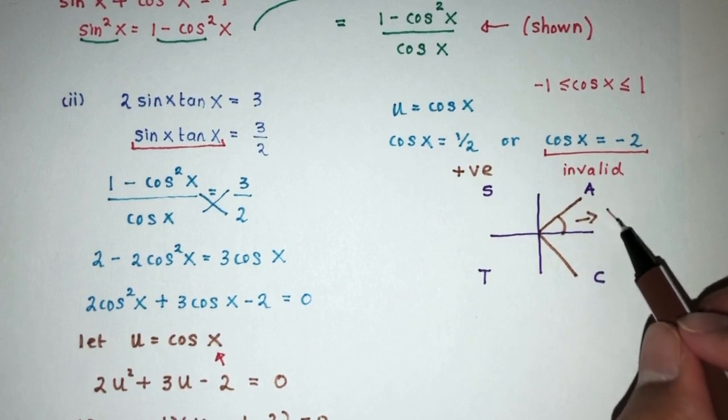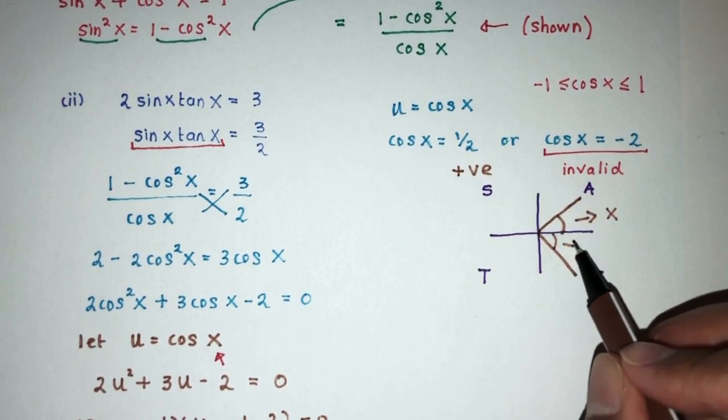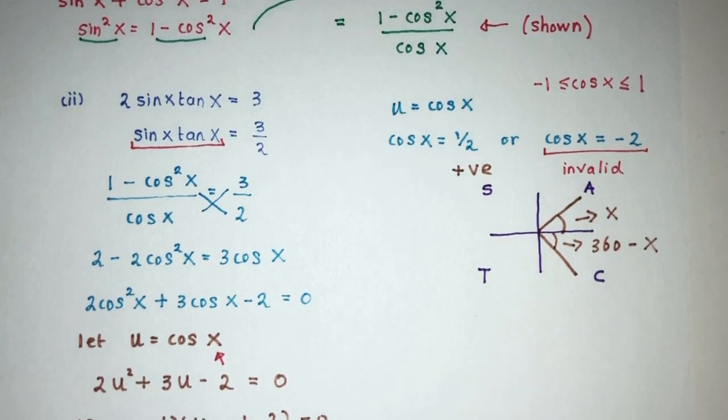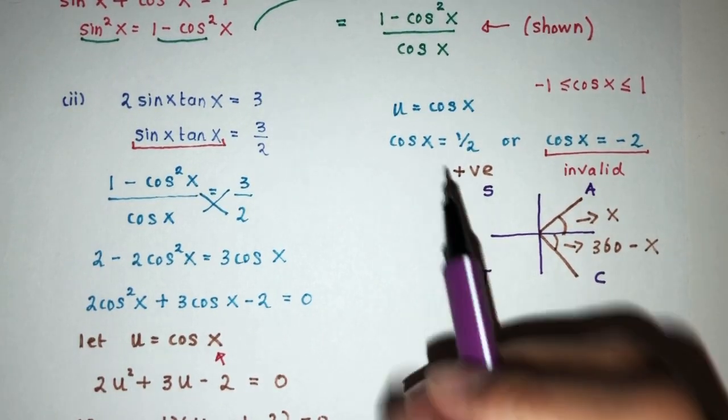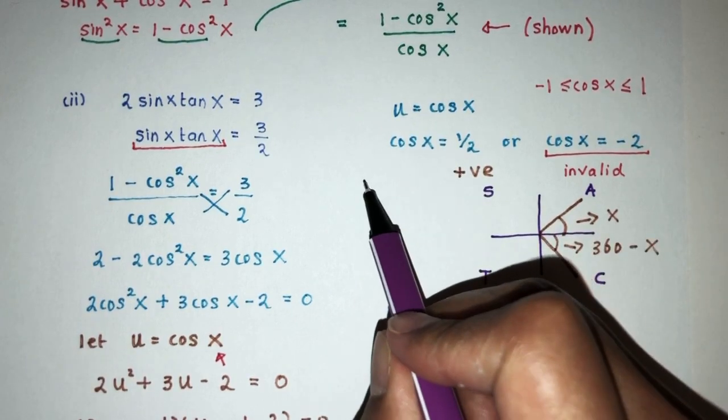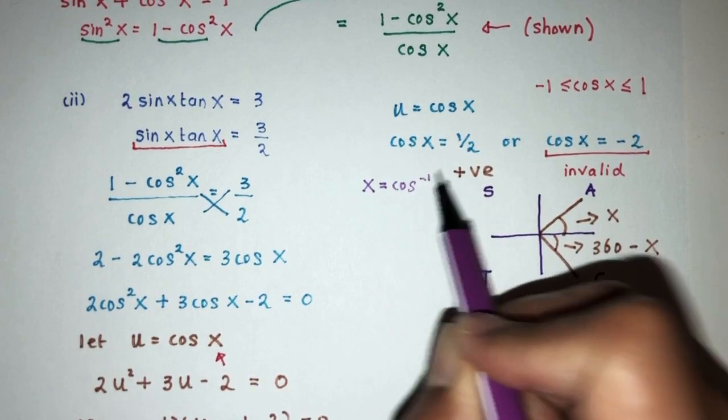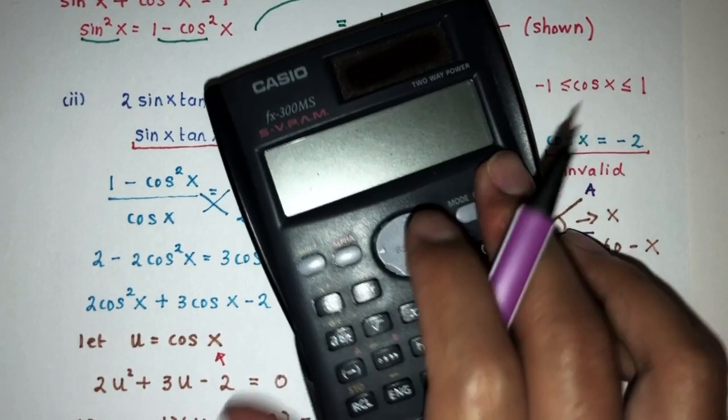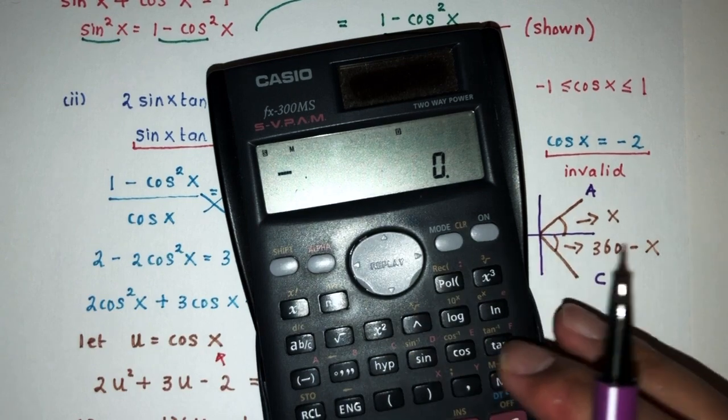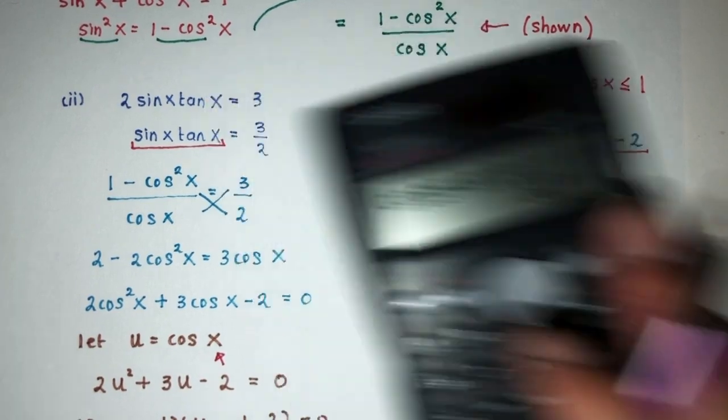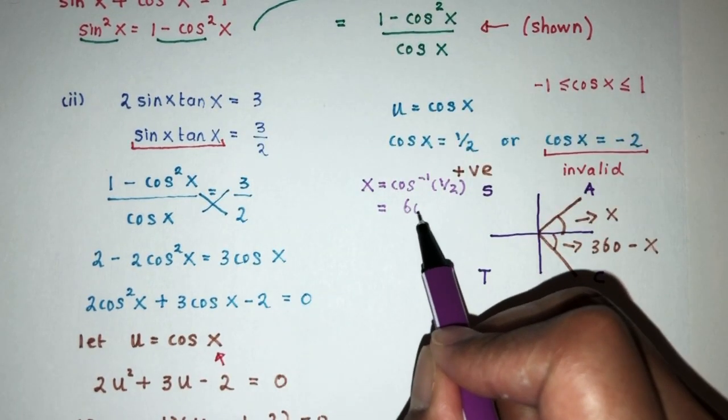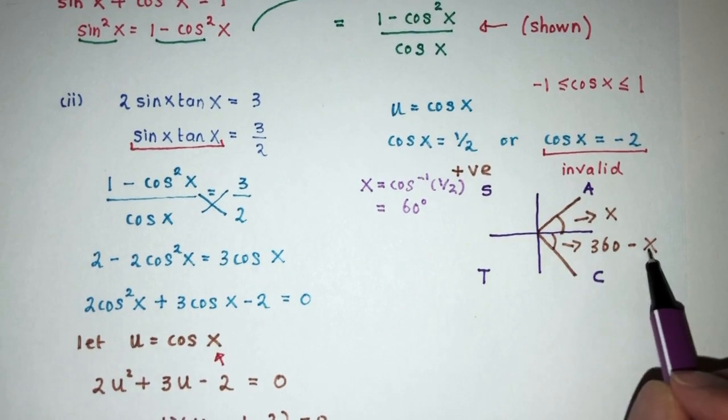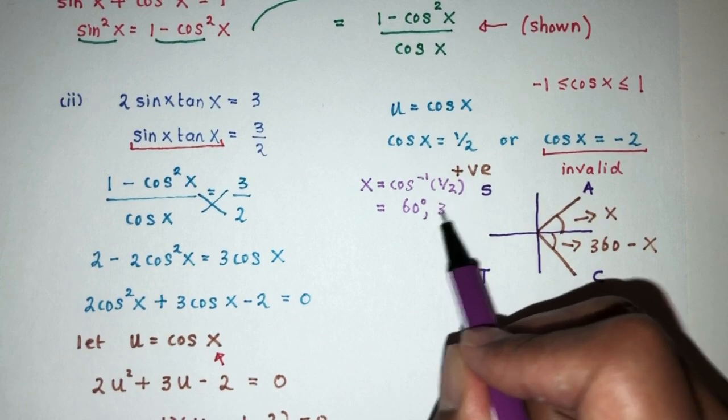To find this angle, very simple, which is x. And this one will be 360 minus x. Okay, so let's do this. Now, because it is positive, I can do this directly. So x is equal to cos inverse of half. That will give you. Of course, use your calculator. So cos inverse of half. That will be 60 degrees. That is the angle in the first quadrant, right? And then to find this one, we take 360 minus 60. That will give you 300.